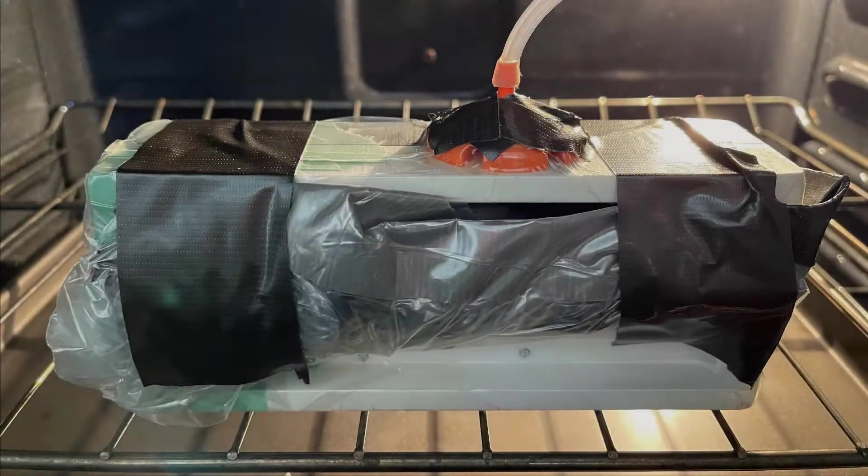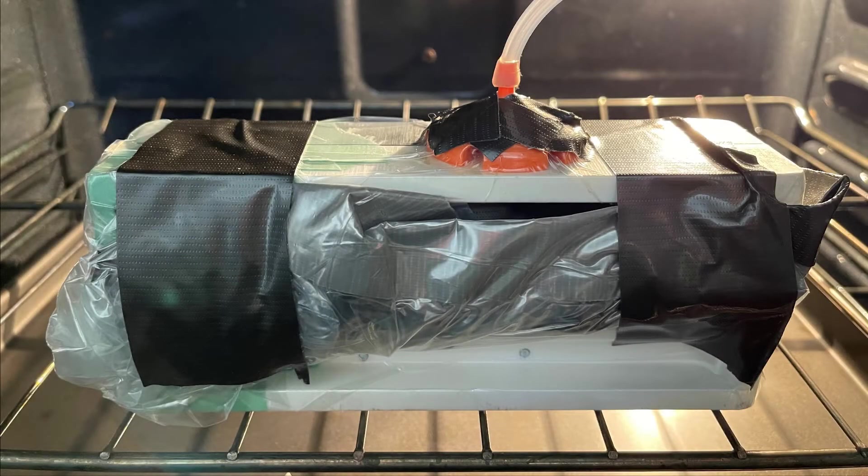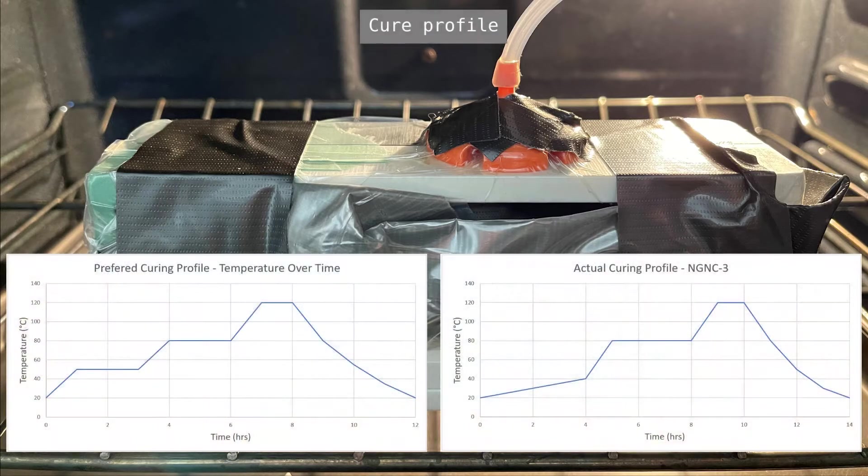While we don't have our fancy programmable oven completed yet, this standard kitchen oven will have to do for now. The actual curing profile for this layup is shown on the right compared to the preferred profile on the left. This oven cannot control temperatures below 80 degrees Celsius, so the initial 4 hour dwell time is achieved by leaving the light on with the door closed. Although we never reach 50 degrees Celsius as we would like for the first preferred dwell temperature, the rest of the profile is similar and achievable with this oven.